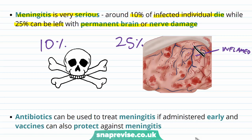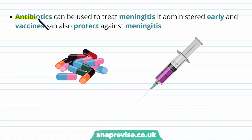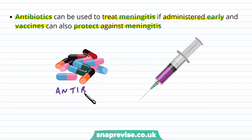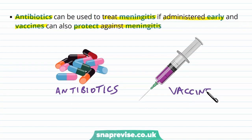The infection will cause lots of immune responses, and it can be very destructive to brain tissue because it's lying very close to the brain itself. In terms of treatment, antibiotics can be used to treat meningitis if they're administered early enough, and vaccines can also protect against meningitis. Antibiotics are useful to tackle the bacteria only if it's in the early stages, and vaccines are used to prevent meningitis — many people in the UK receive meningitis vaccines.